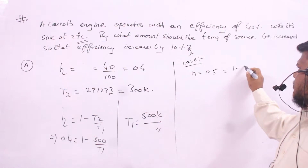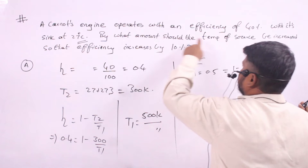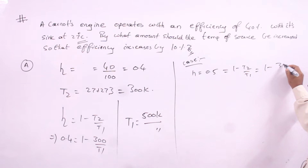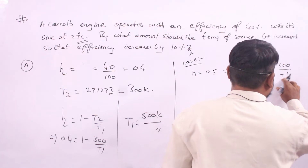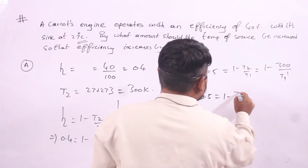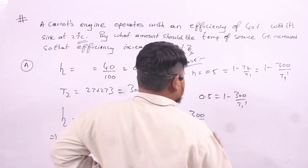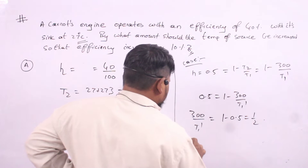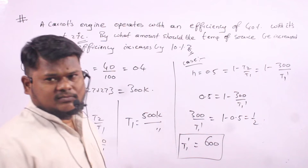The new condition is again: efficiency equals 1 minus T2 divided by T1 dash. The question says to increase the temperature of the source, so the sink temperature remains the same at 300 Kelvin. So 0.5 equals 1 minus 300 divided by T1 dash. Therefore 300 divided by T1 dash equals 0.5, giving T1 dash equals 600 Kelvin.